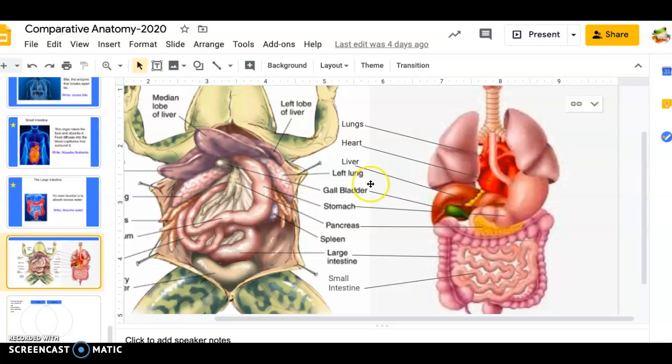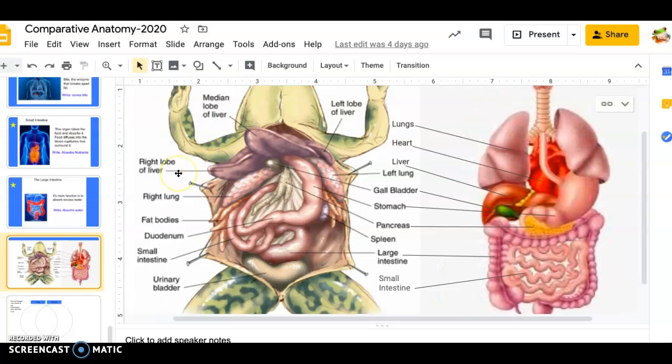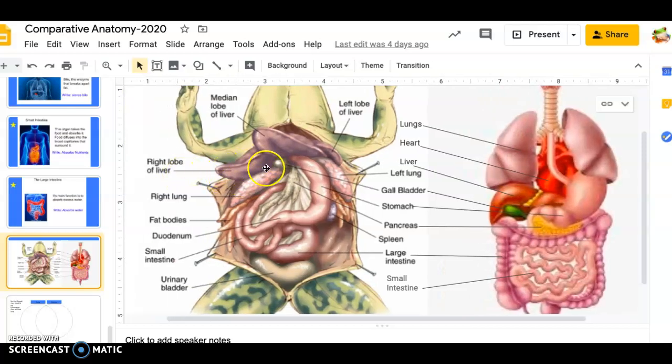The other big difference I think noticeably is in the liver. We have a two-lobed liver. There's two pieces to it. And the frogs have a three-lobed liver. So they have a left lobe, they have a center lobe, or that's median, means middle. And then they also have a right-lobed liver right here. So they have three lobes to their liver. We have two.